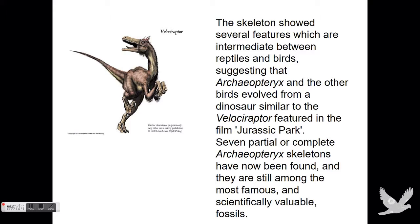The skeleton also showed several features which are intermediate between reptiles and birds, suggesting that birds root form from a dinosaur similar to the velociraptor, featured in the film Jurassic Park. Seven partial or complete Archaeopteryx skeletons have now been found, and they are still among the most famous and scientifically valuable fossils.